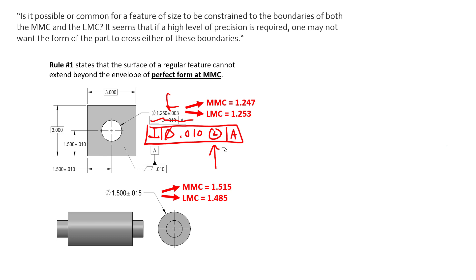and nothing's assembling through that hole or around that shaft. We're only controlling minimum wall thicknesses with this LMC modifier. When you see this LMC modifier on a size dimension like this, Rule Number One does flip and it says perfect form at LMC.